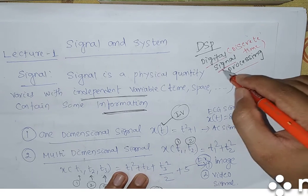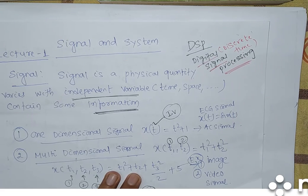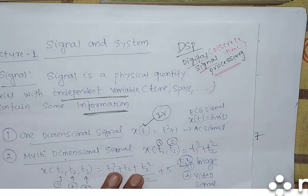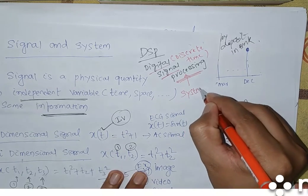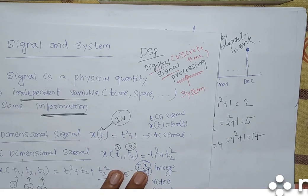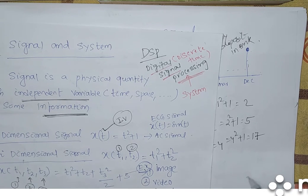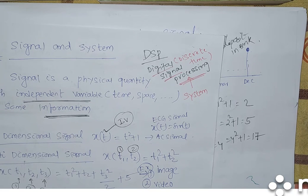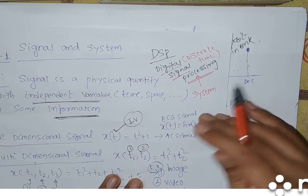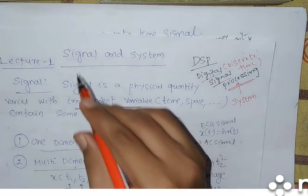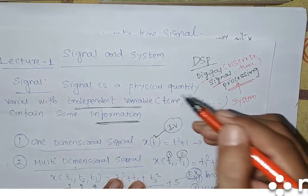The important part is the Signal. First, you should understand what is Signal. Once you understand what is Signal, then you can go to the processing part. In the processing part, we require one System to process the Signal. That's why I have given the topic Signal and System.